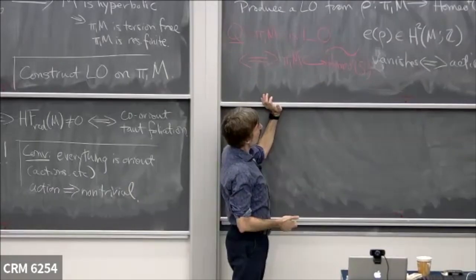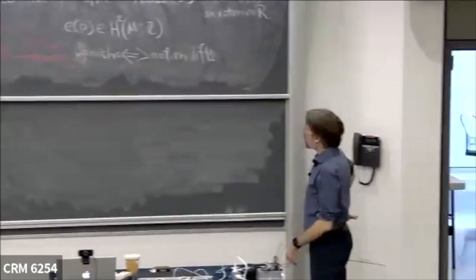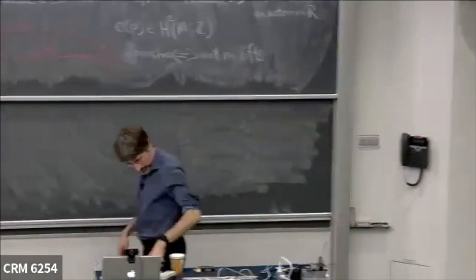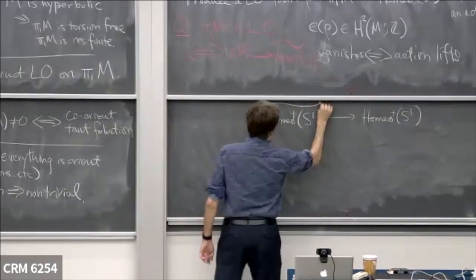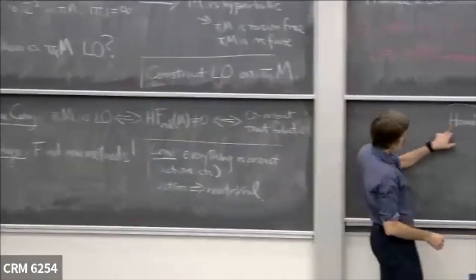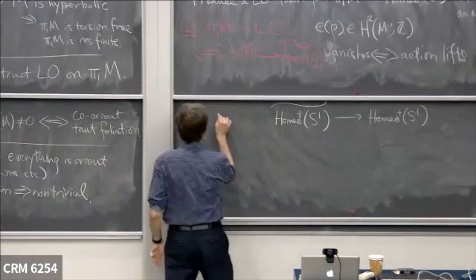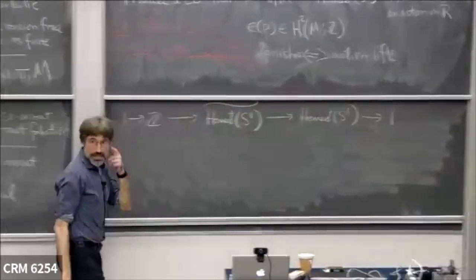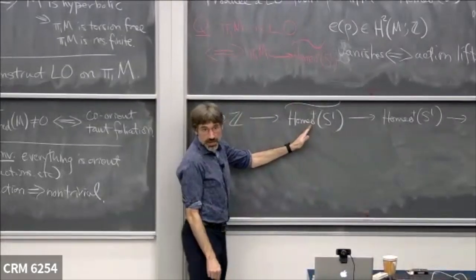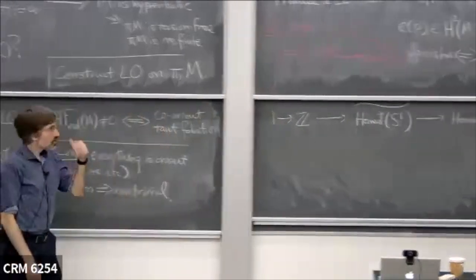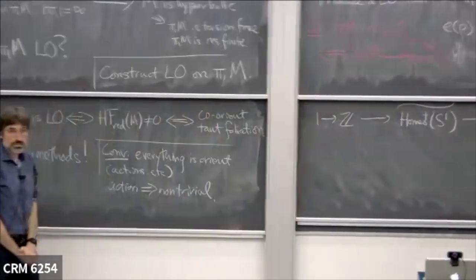One way to think about this: we have homeomorphisms of the circle, and we're looking at homeomorphisms of the line that are lifts — these are just the subset of homeomorphisms of the line that commute with translation by one. We have this short exact sequence. We have a homomorphism to Homeo+(S^1), and we want to know: does it lift to Homeo+(R)? We end up with a cohomology class — that's the Euler class. It's like building a circle bundle over our manifold with this as the monodromy: this is the obstruction to that bundle having a section.